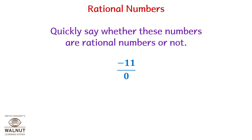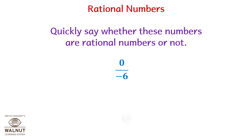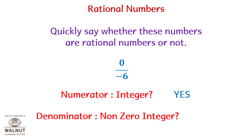Minus eleven upon zero: numerator is integer? Yes. Denominator is a non-zero integer? No. So no, this is not a rational number. Zero upon minus six: numerator is an integer? Yes. Denominator is a non-zero integer? Yes. So it is a rational number.